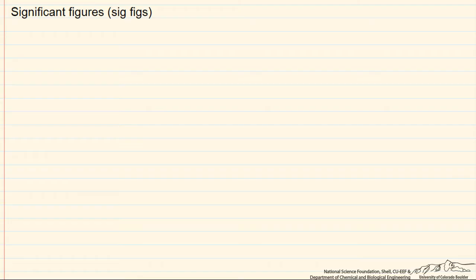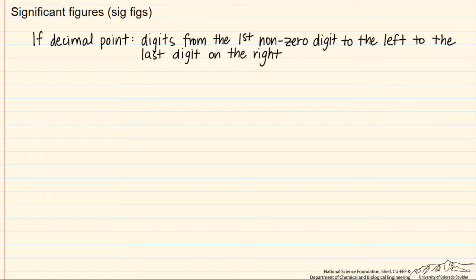How many do you have? And the definition is the digits from the first non-zero digit that is to the left, and then from there you go either to the last digit on the right if there's a decimal point.